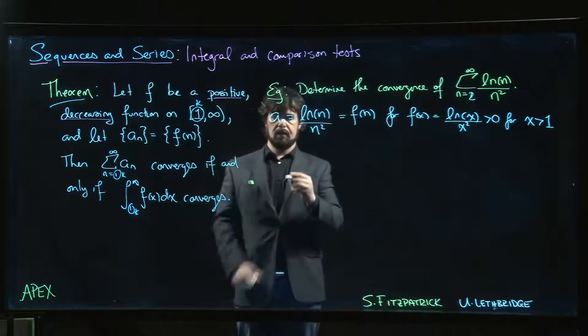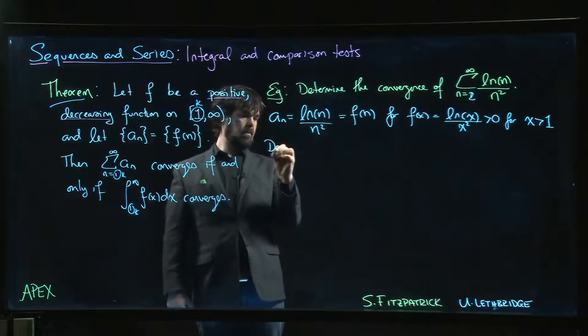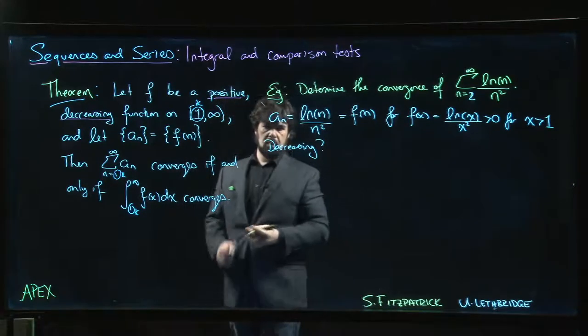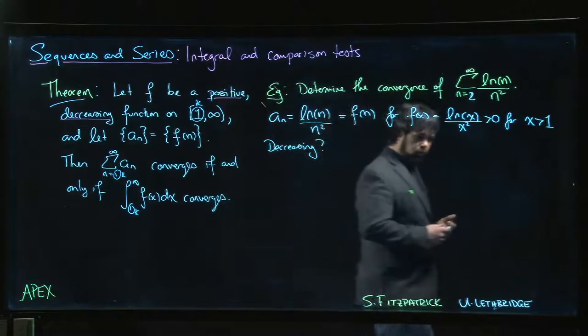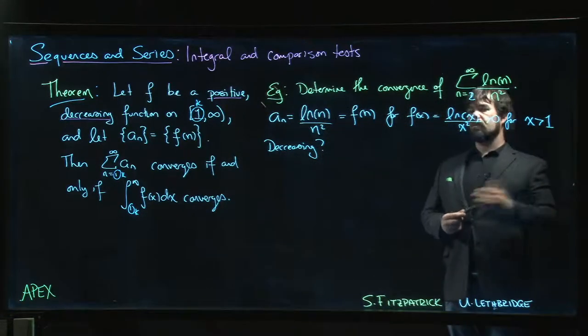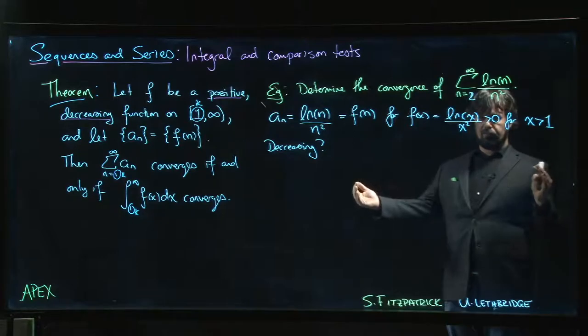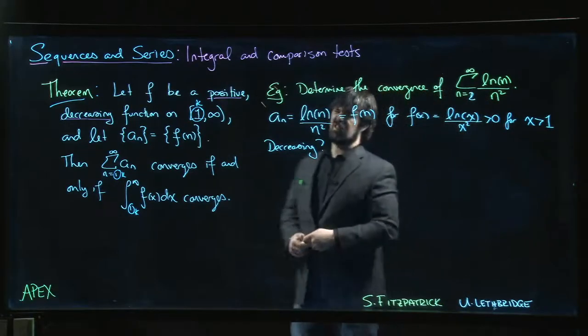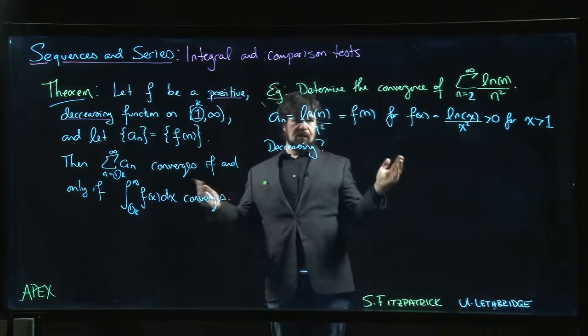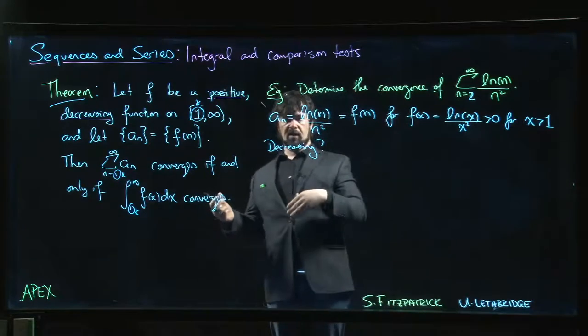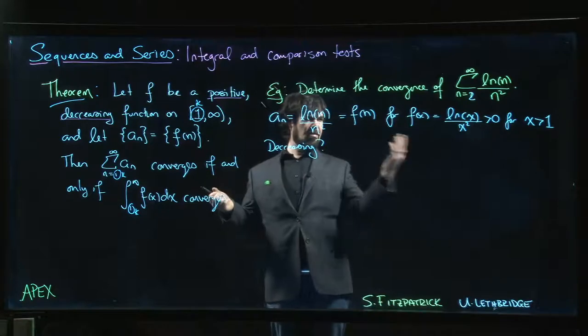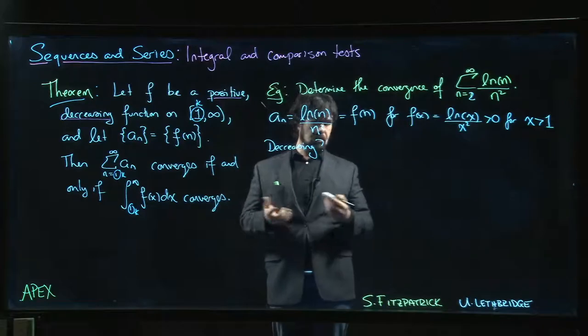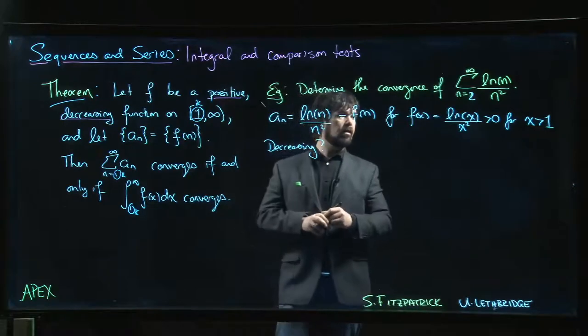Is it decreasing? How do we check if it's decreasing? We could appeal to the definition and say, okay, I'm going to show that if x2 is bigger than x1, then f(x2) should be smaller than f(x1). There are sort of these difference tests or ratio tests that you can apply to the sequence, but it's a function of x. It's a differentiable function of x. We know how to decide if a differentiable function of x is decreasing. We look at the derivative.